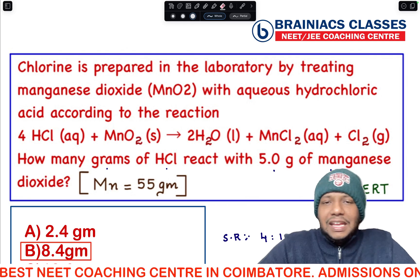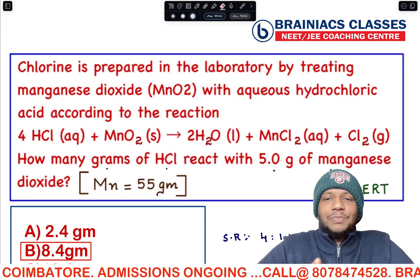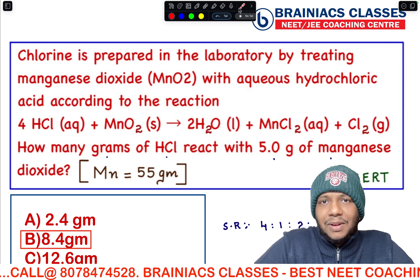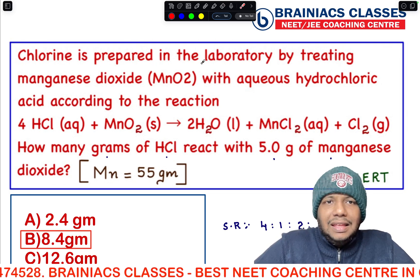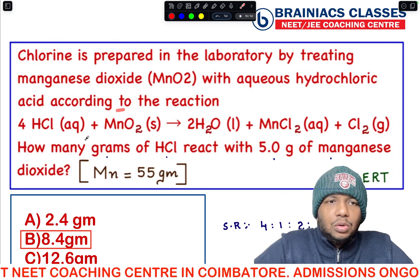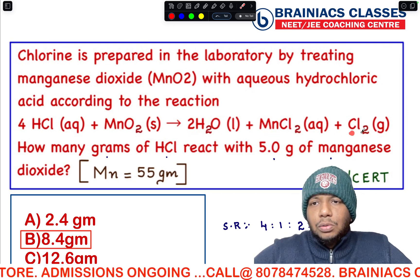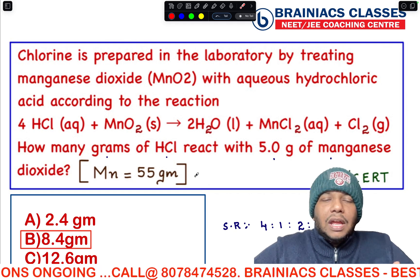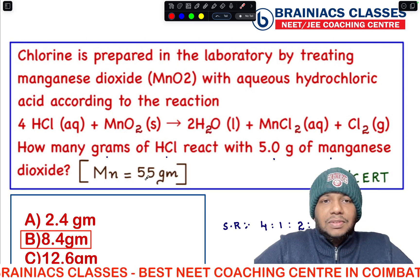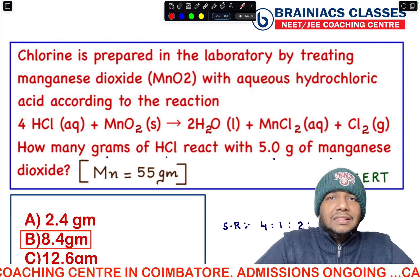This is day one. We are taking the chapter Basic Concepts of Chemistry and have selected three important questions expected for NEET 2024. The first question: chlorine is prepared in the laboratory by treating manganese dioxide with aqueous hydrochloric acid according to the equation: 4 mol HCl + MnO₂ → 2H₂O + MnCl₂ + Cl₂. The question asks: how many grams of HCl react with 5 grams of manganese dioxide?